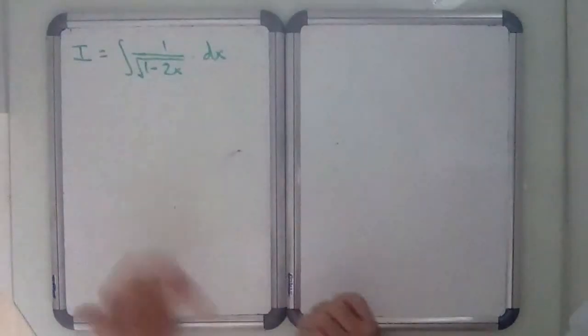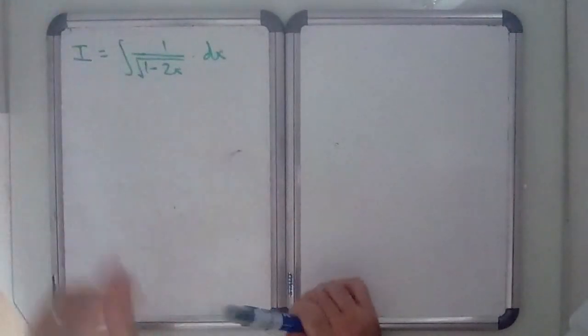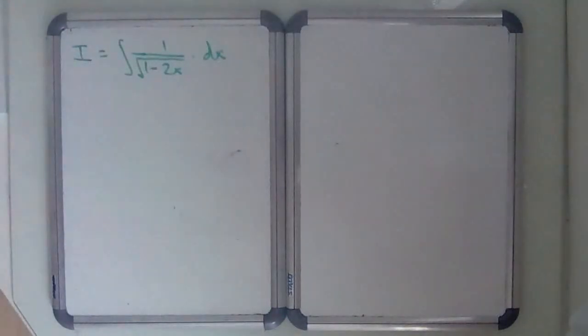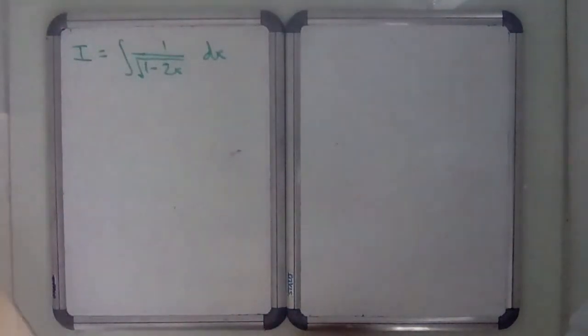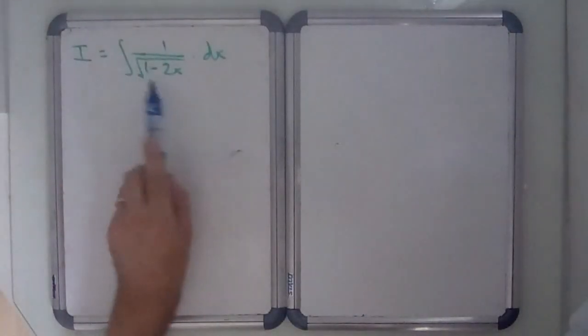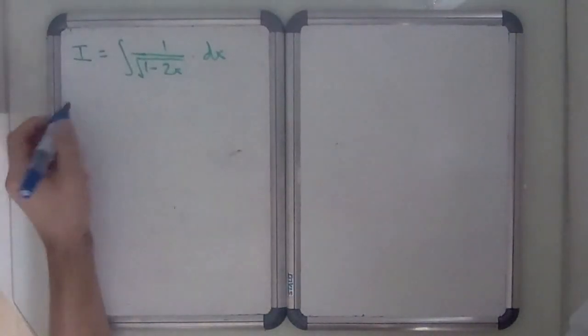Here we've been asked to evaluate the integral I for integral of 1 over the square root of 1 minus 2x with respect to x. Again, I'm going to use a u substitution, and it's going to be the nasty bit inside the square root.